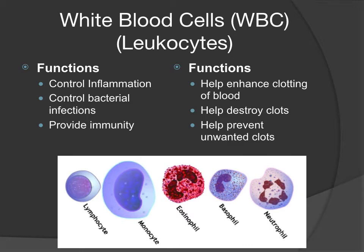We're starting with white blood cells. These are also called leukocytes — leuko means white, cite means cell, so these are white blood cells. They get their name primarily from when we spin the sample down and we get that buffy coat layer in between the erythrocyte layer and the plasma layer, so it kind of looks like a white stripe in that area.